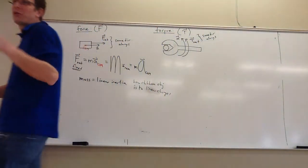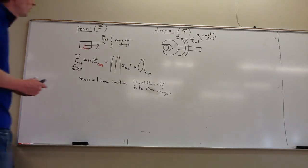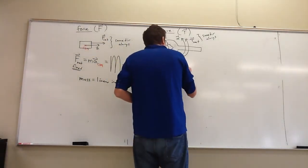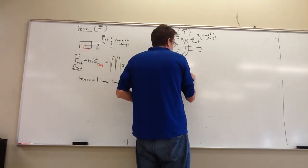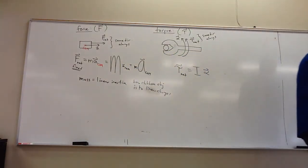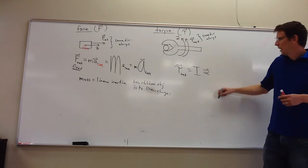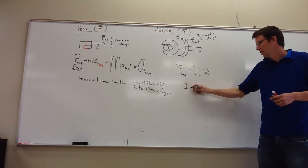So I've already hinted at the fact that there is a rotational version of it, and here is what it is. Net torque equals I times alpha. So the net torque and angular acceleration are also related by a very similar equation. And I is called rotational inertia.